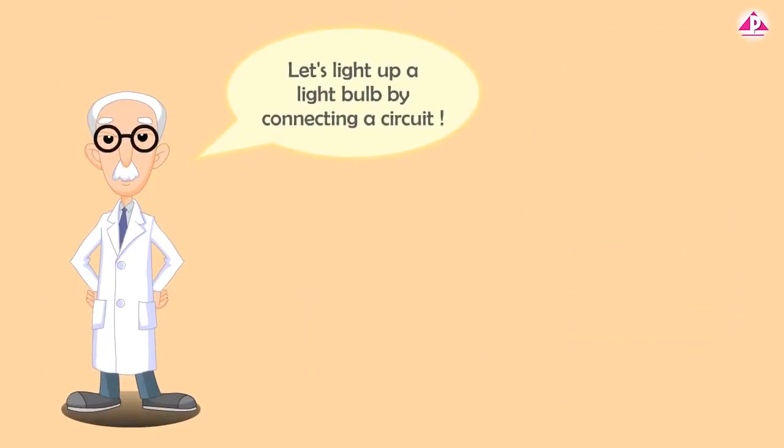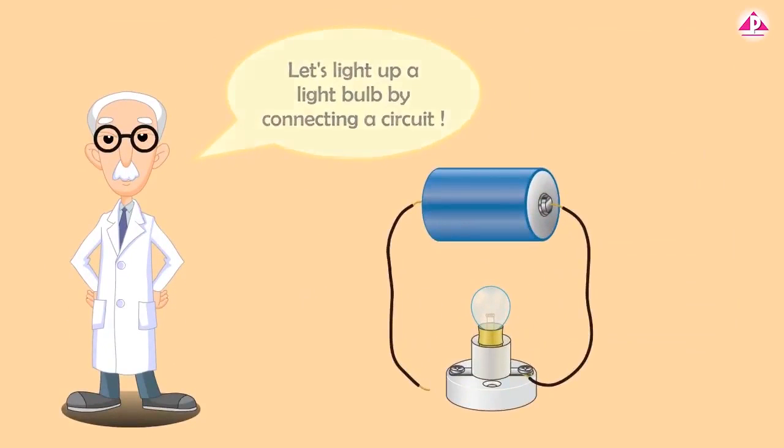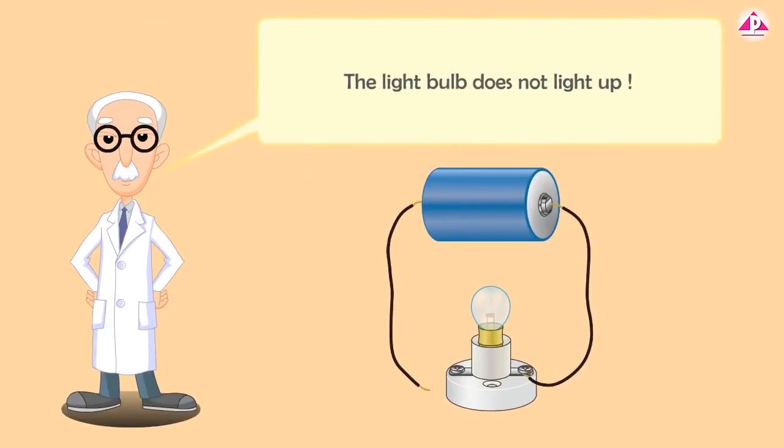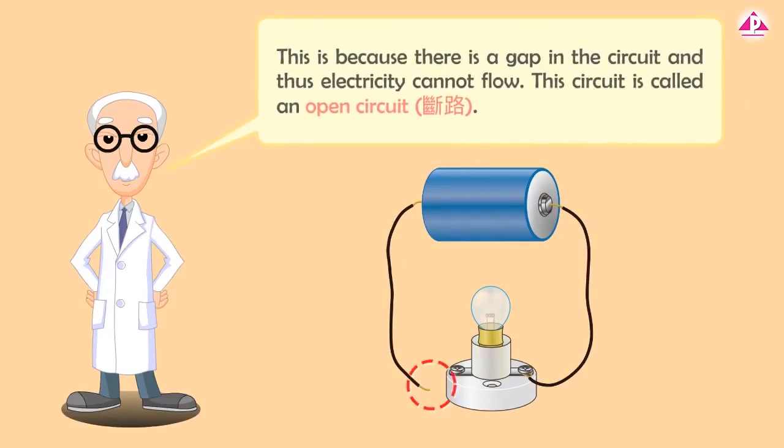Let's light up a light bulb by connecting a circuit. The light bulb does not light up. Do you know why? This is because there is a gap in the circuit, and thus electricity cannot flow. This circuit is called an open circuit.